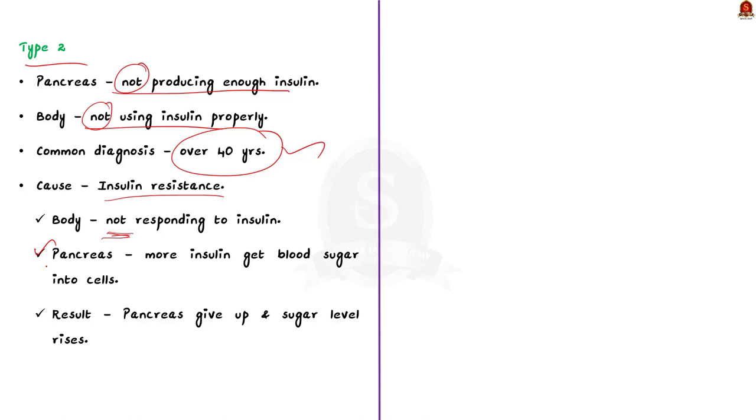Over time, cells stop responding to insulin. This is called insulin resistance. Eventually, the pancreas gives up producing insulin and blood sugar keeps rising. This is all about the second type.